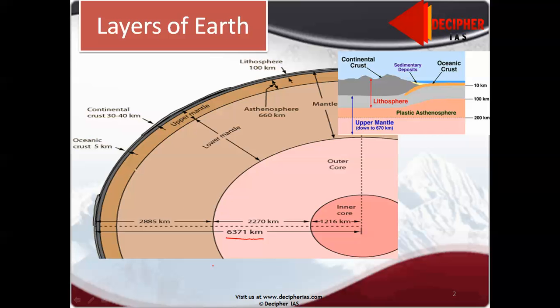The crust has two types, continental crust and oceanic crust. Continental crust is approximately 20 to 40 kilometers on average over the whole earth. Oceanic crust is 5 to 10 kilometers only. The continental crust even extends to 70 kilometers at some places like Tibet.